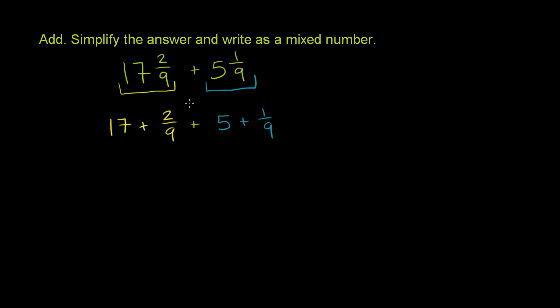These two statements are completely equivalent. And we know that when you're just adding a bunch of numbers, it doesn't matter what order you do it in. So you can swap the order. So you could say that this is the same thing as 17 plus 5 plus 2/9 plus 1/9.